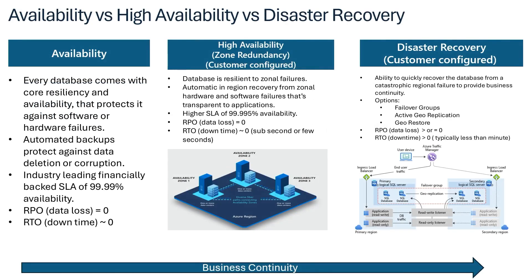This is a slide we covered in our earlier episode. We talk about three pillars of business continuity: availability, high availability, and DR, which is disaster recovery. High availability is customer-configured, same as the case with disaster recovery. In disaster recovery, it provides redundancy across regions, configured between a primary and secondary region.